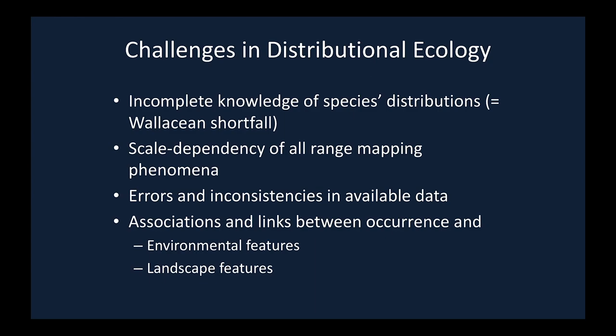This example illustrates challenges in distributional ecology. We have pervasively incomplete knowledge of species distributions — some have called this the Wallacian shortfall. We have scale dependency of all range maps, potential for errors and inconsistencies in data, and associations between occurrence of our species and features of the environment and landscape.